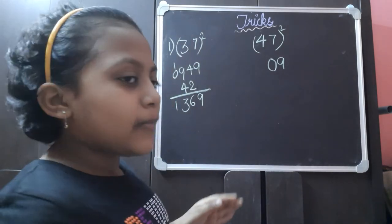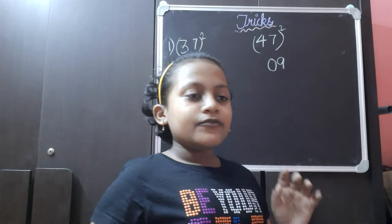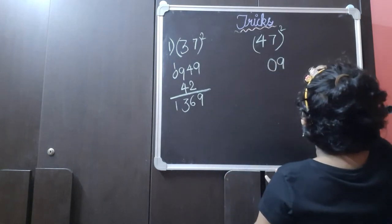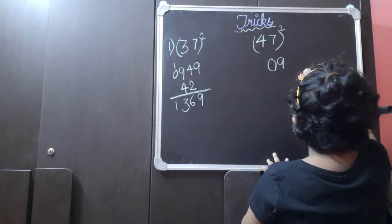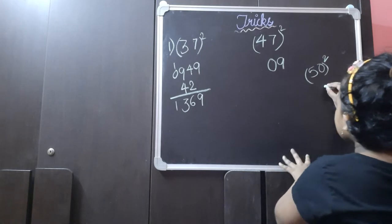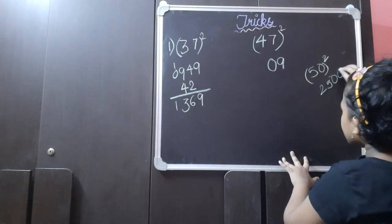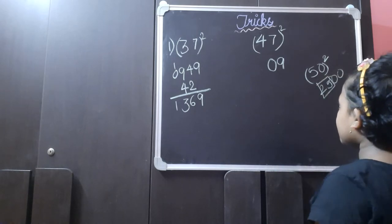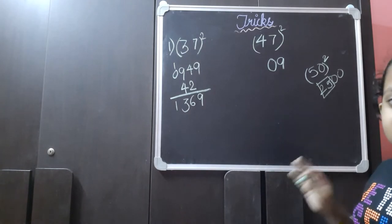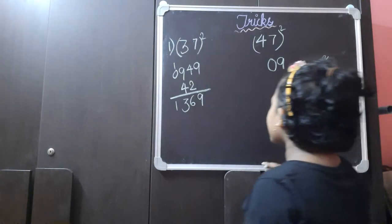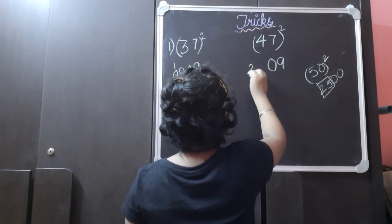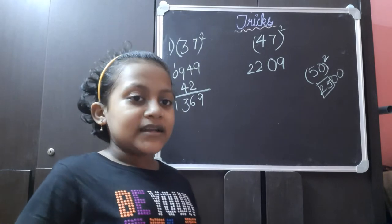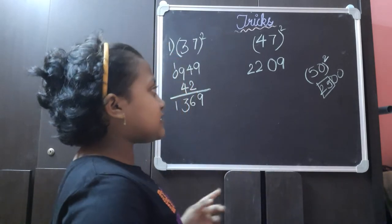You might wonder why we subtract from the number 25. Because 50 square is 2500, and from 2500 we take the number 25. So if we subtract 3 from 25 we get 22. We write 22 directly, and we get the number 2209. This is the answer for 47 square.